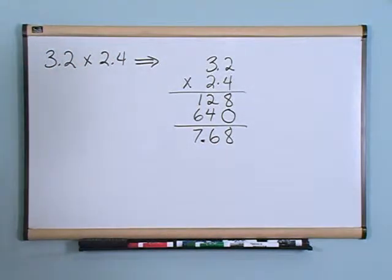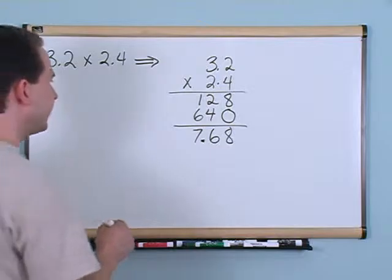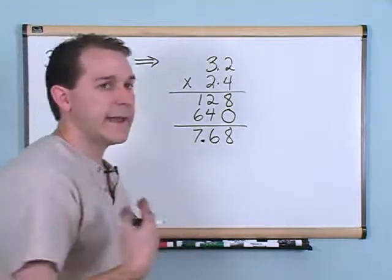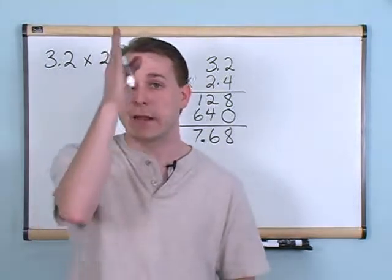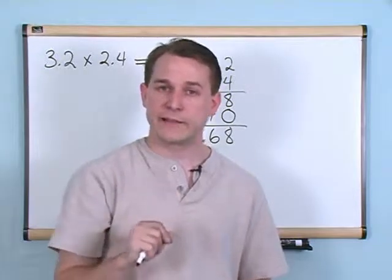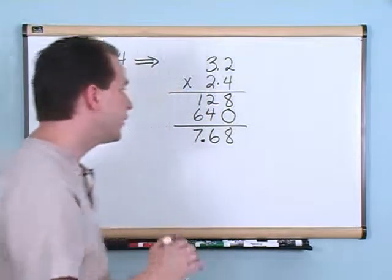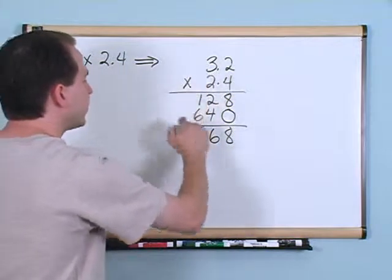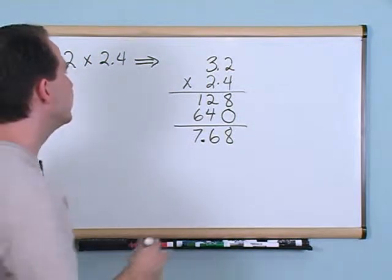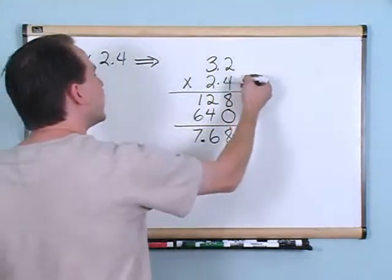We have 2 decimal places total. So you start at the right of your answer and go left: 1, 2 — and you put your decimal there. 7.68 is the answer.